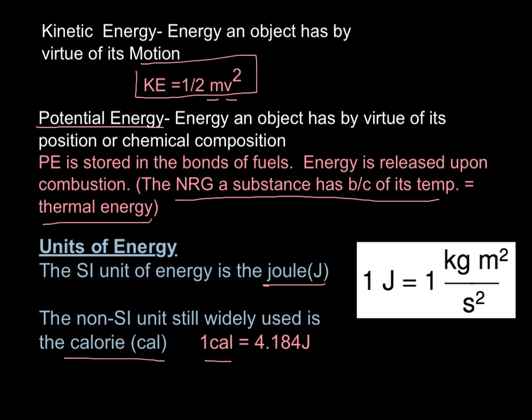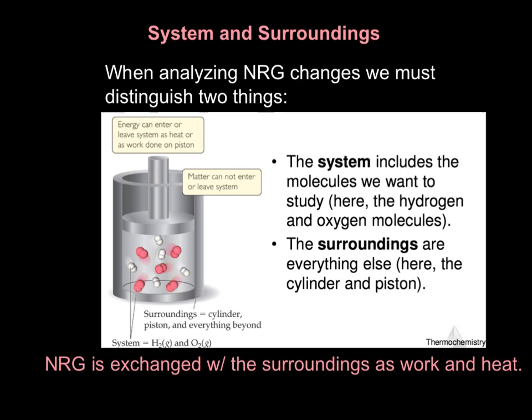When we're looking at how kinetic energy and potential energy change, we have to keep in mind the system and the surroundings. We have to set parameters for ourselves. When looking at energy changing, we look at the system - what we're studying. It usually deals with the reactants and products. In this case, the example in my picture to the left, the hydrogen and oxygen molecules here in this chamber are considered the system. The surroundings are everything else. Everything outside the system is the surroundings: the piston here, the metal cylinder case outside, the air outside - all is considered the surroundings.